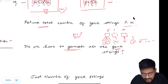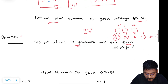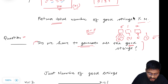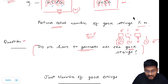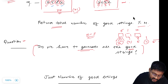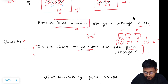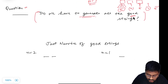At every step we know what digit we can use. If they had asked us to generate all the strings, we could use recursion. But in this case, they are not concerned with the list of good strings — they just want the total count. So we just return the number of good strings.